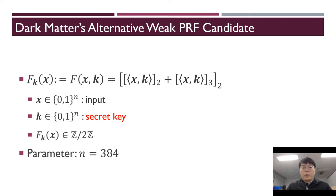They also propose an alternative weak PRF candidate for two-party computation. The secret key is an n-bit vector, and input x is an n-bit vector. Then compute the inner product of input x and secret key k, then sum modulo 2 of the result and modulo 3 of the result, and then compute modulo 2. This is a very simple construction. They suggest parameter n is 384.